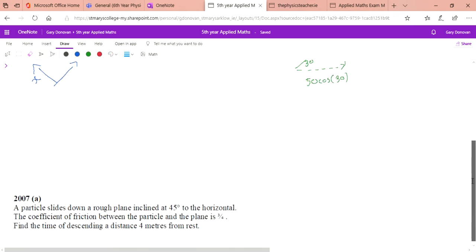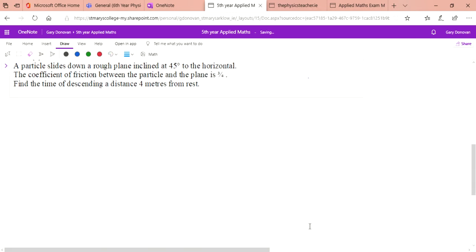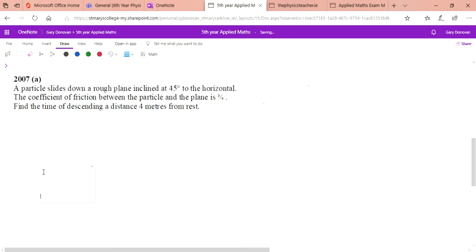This is the 2007 higher level question. A particle slides down a rough plane, and remember rough means there's friction, friction equals mu times R, which is inclined at an angle of 45 degrees. As always draw your vector diagram nice and big. This is 45 degrees, this is our particle. The coefficient of friction between the particle and the plane is 3 over 4. Find the time taken to descend 4 meters from rest.